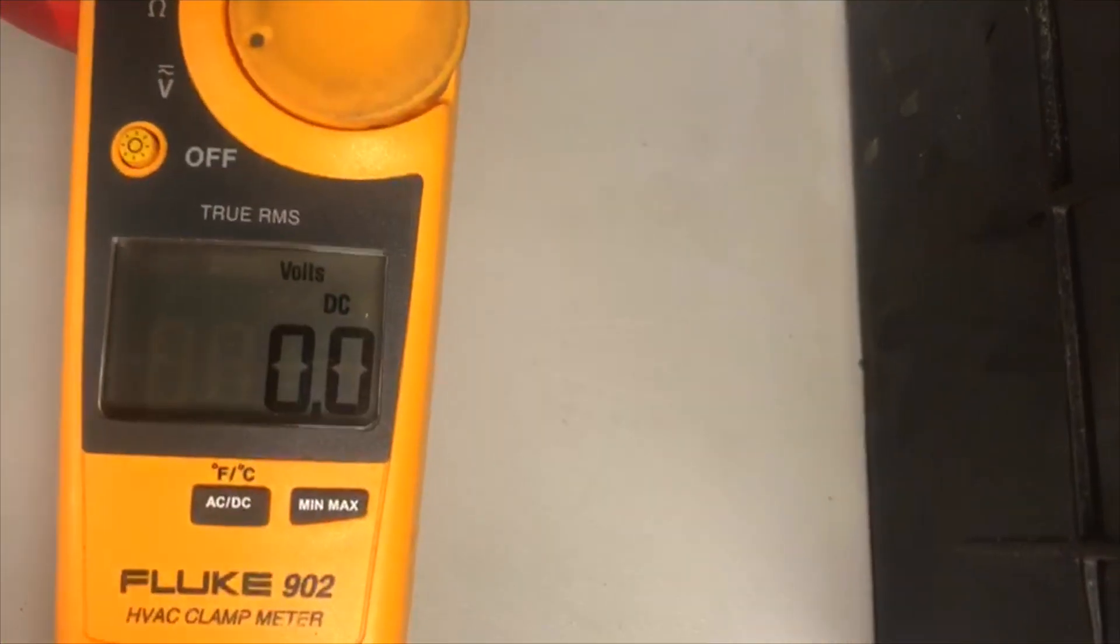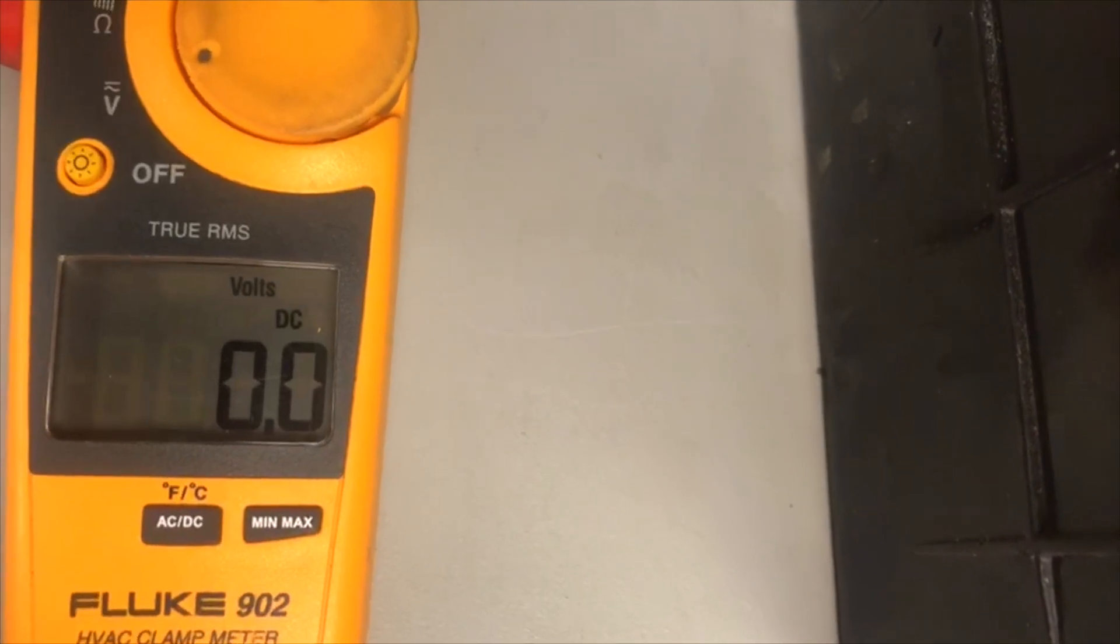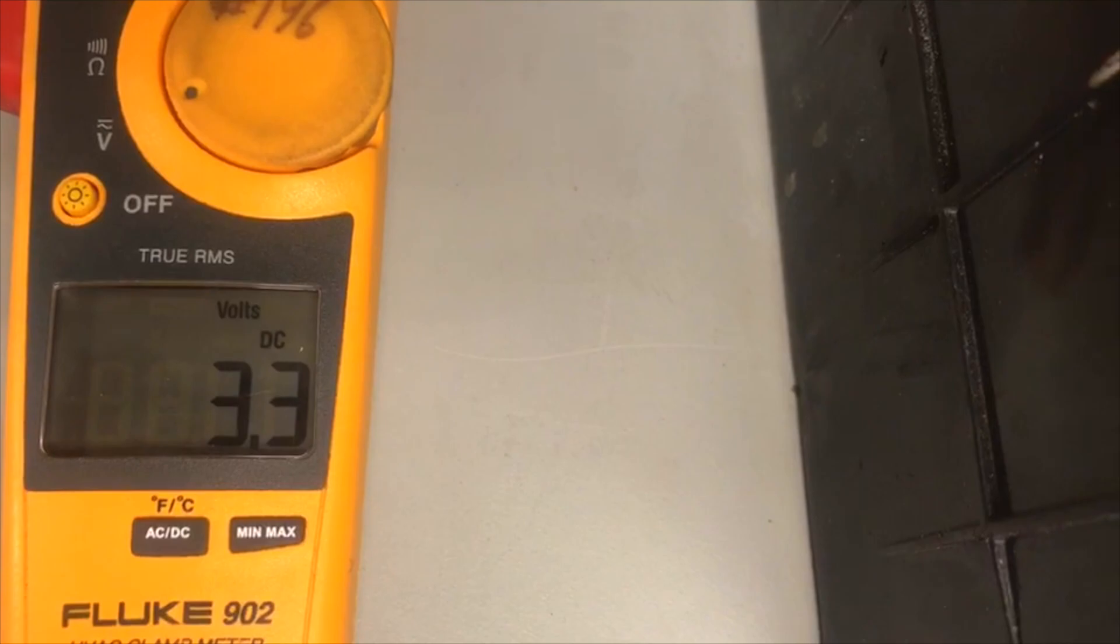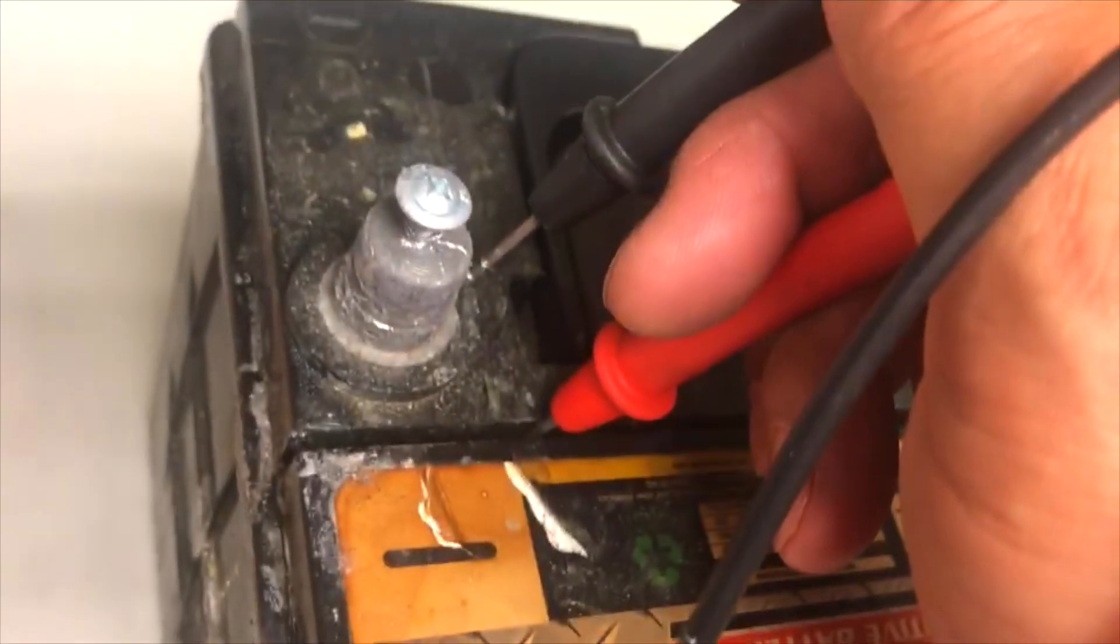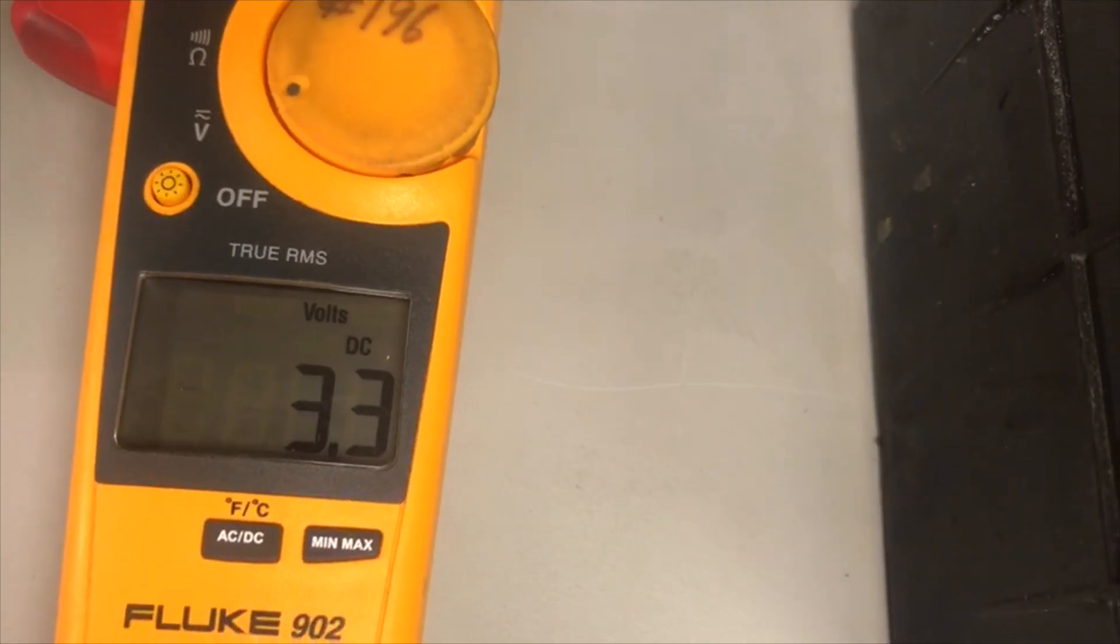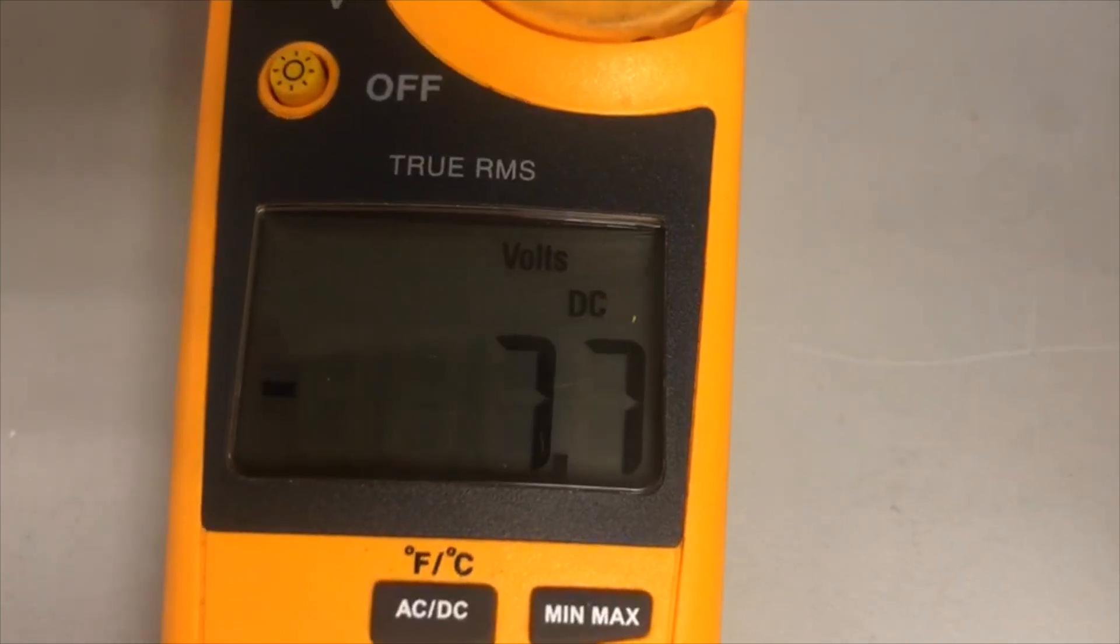And I am getting zero. This is what you should be getting. But anytime you get a voltage going to the casing, you're constantly losing power. So you want to check the negative and you also want to check the positive going to the casing.